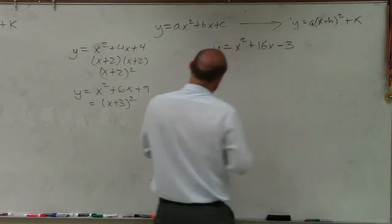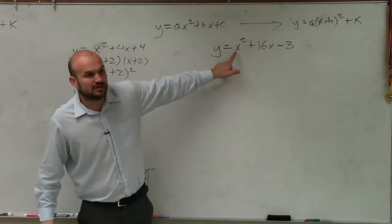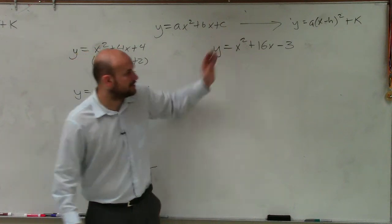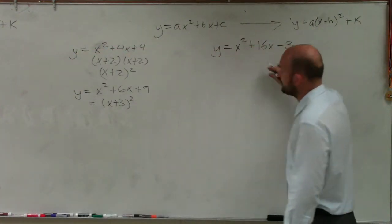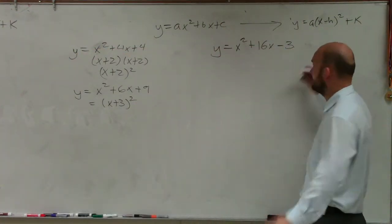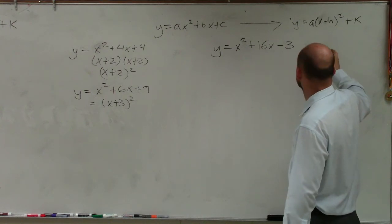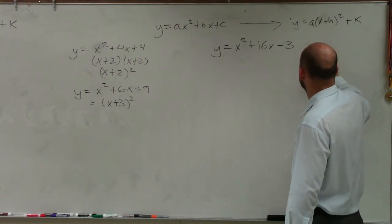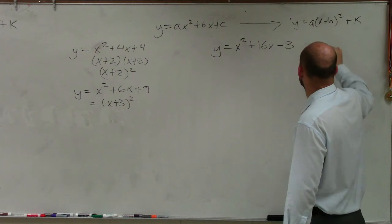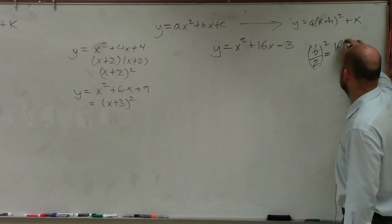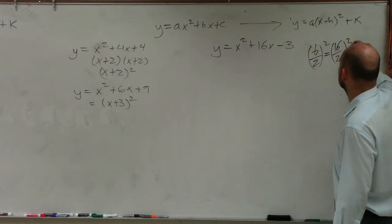So how to create that, first step, make sure your coefficient is 1. That's good for us. The next step, let's create the binomial squared, or the perfect square trinomial. To do that, I take b divided by 2, and I square it. In this case, my b is 16 divided by 2 squared.